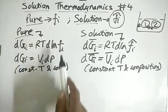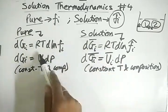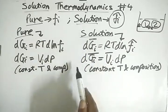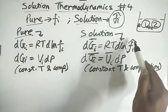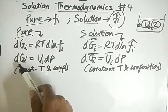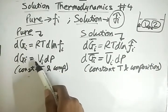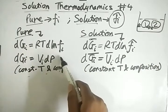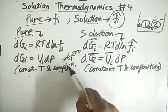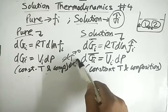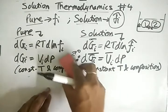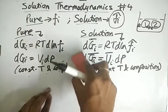For pure substances we have dGi = RT·d(ln fi), and for a solution it is the same thing, but we use the partial molar property and fi-cap. For constant temperature and composition for pure substances, dGi = Vi·dP, because the dT term becomes zero and the dni term also becomes zero.